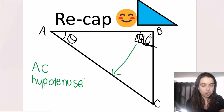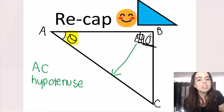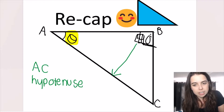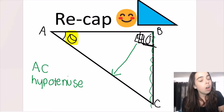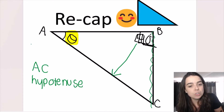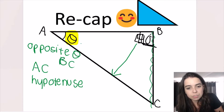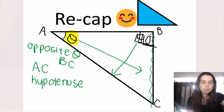Another term I want to introduce is theta — this angle over here is called theta. If you look at the sides surrounding theta, we have three sides. AC is the hypotenuse. BC is the side opposite theta — because theta faces that direction, it faces BC, so BC is opposite theta. Opposite theta is BC.